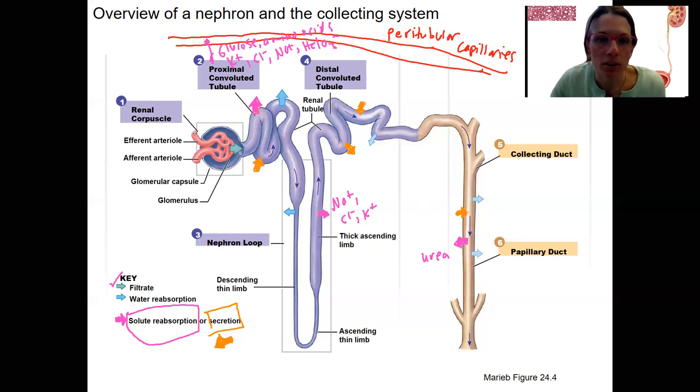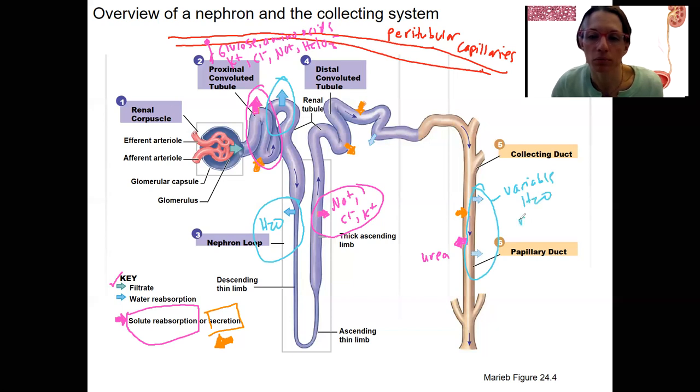So the big ones where we'll talk about reabsorption are going to be here and here. Solute reabsorption. Water reabsorption is going to be pretty big in the proximal convoluted tubule, the ascending limb of the nephron loop, and then collecting duct. This is going to be variable water reabsorption, meaning it can be regulated by antidiuretic hormone.